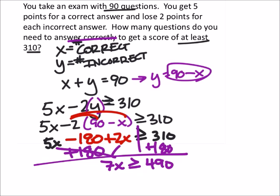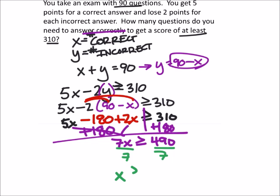That's quite convenient, because now when I divide both sides by 7, I get x is greater than or equal to 70.